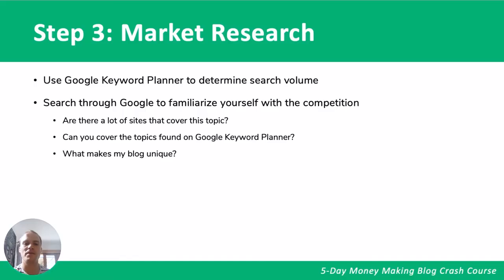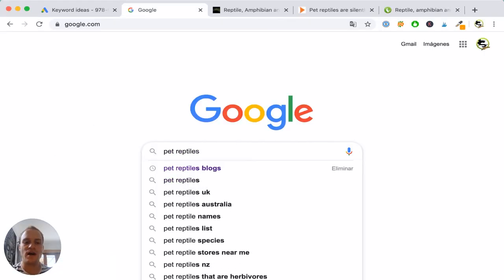The next step is to familiarize yourself with the competition, which we can do through a quick Google search. Ask yourself: are there a lot of sites that cover this topic, and if so, can you be unique and stand out amongst them? Can you cover the topics found on Google Keyword Planner? For example, there may not be many people talking specifically about Russian tortoise or the Greek tortoise. And what makes your blog unique — how can you stand out amongst competitors?